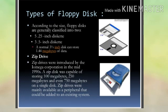According to size, floppy disks are generally classified into 5.25 inch and 3.5 inch. Another type is the zip drive, which can store 100 megabytes, 250 megabytes, or 750 megabytes of data on a single disk.